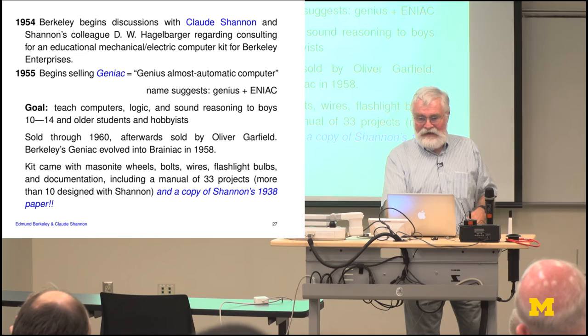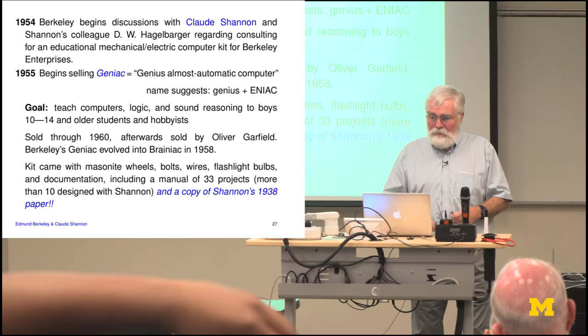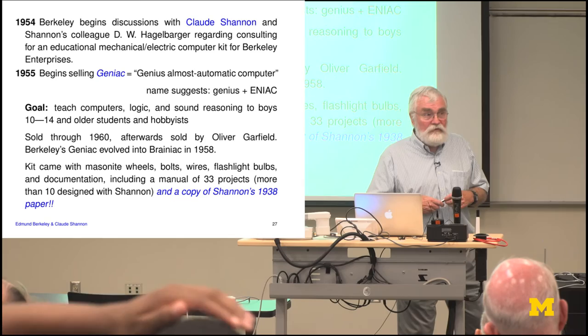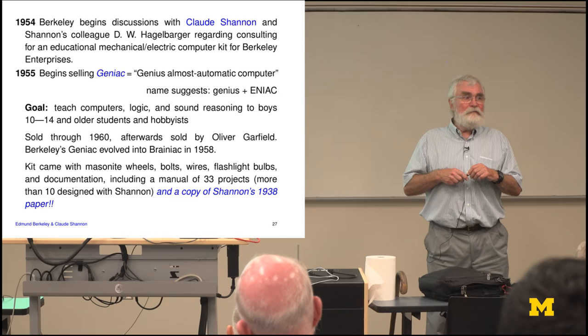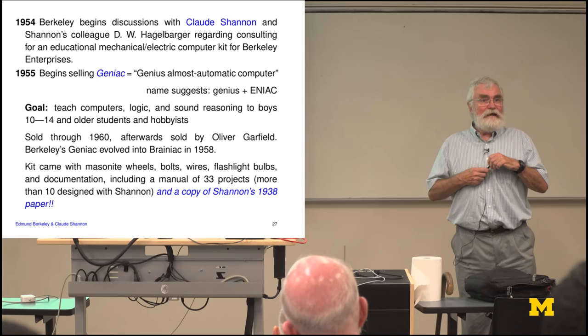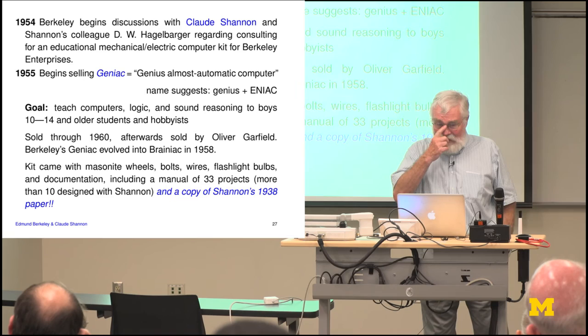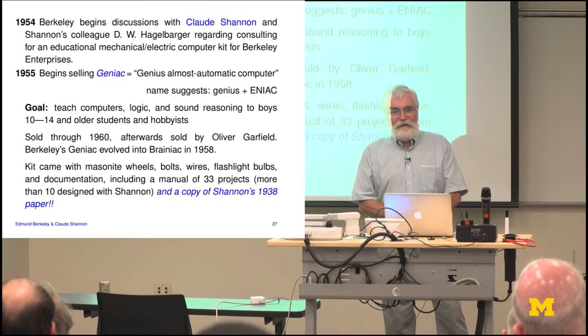Geniac — most people figured the name was just to combine 'genius' and 'ENIAC.' The idea, as typically sexist of the 1950s, was to teach computers, logic, and sound reasoning to boys and other students and hobbyists. It was sold through about 1960. Berkeley had a falling out with the guy who helped him build the first ones, who basically went bankrupt and then started selling it on his own, giving nothing to Berkeley. So Berkeley changed the name to Brainiac — so far as I know, the first use of that word. The kit came with wheels, bolts, wires, flashlight bulbs, documentation, and a copy of Shannon's 1938 paper based on his 1937 thesis.